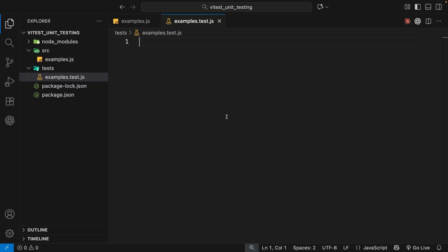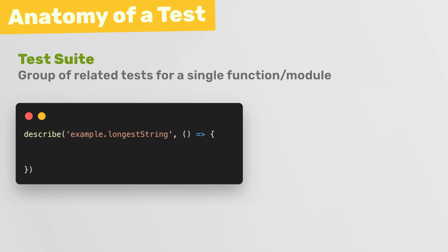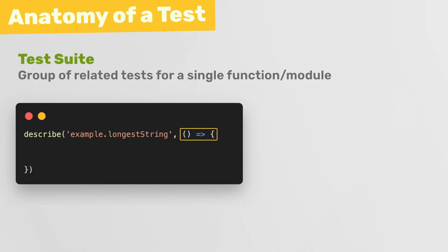Before we write anything, let's quickly go over the basic anatomy of a test and some common testing terminology. When writing unit tests we usually begin by creating something called a test suite — just a group of related tests for a single function, module, or feature. We use the describe function from Vitest to create a test suite. The first argument is a string describing what we're testing, for example a function name or module name like examples.longestString.